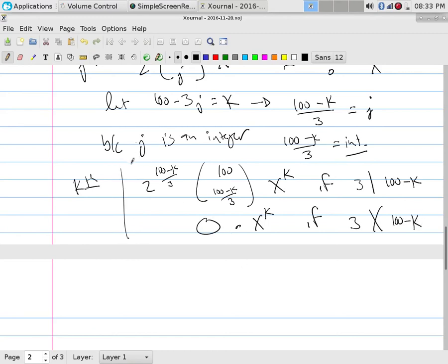it's just simply 0 times x to the k if 3 does not divide 100 minus k. And so we could write it out like this, which is not any prettier.